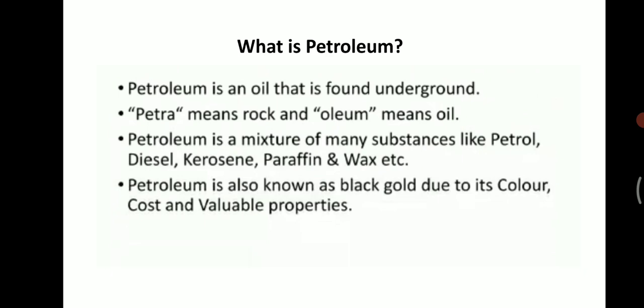Now let us see what is petroleum. Petroleum is an oil that is found underground — we cannot produce it. In the word 'petroleum,' 'petra' means rock and 'oleum' means oil. Petroleum is a mixture of many substances like petrol, diesel, kerosene, paraffin, wax, etc. Petroleum is also known as black gold. Do you know why? Because of its color, its expensive cost, and its valuable properties — it is used in vast areas. That is why it is called black gold.